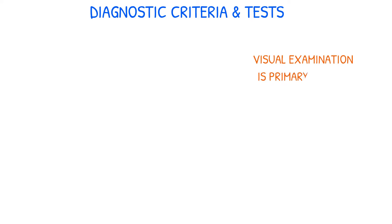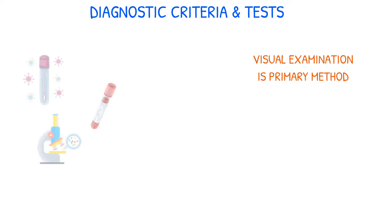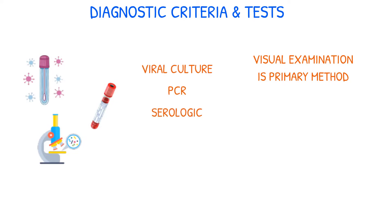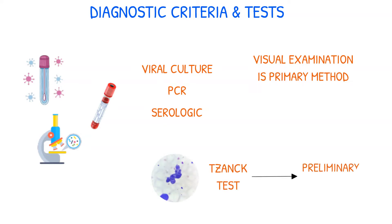While visual examination is the primary method of diagnosis, additional tests may be performed to confirm the presence of the varicella zoster organism. These tests include viral culture, PCR, and serologic tests. The Tzanck test may also be performed to get a preliminary diagnosis, but it is not as sensitive as the other tests.